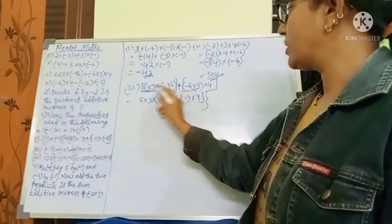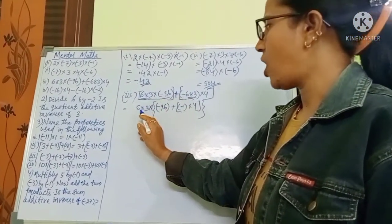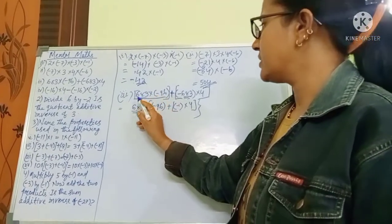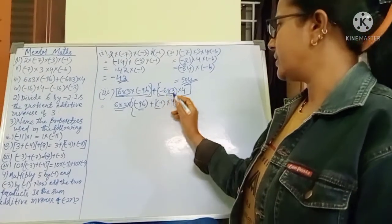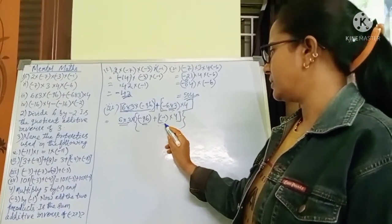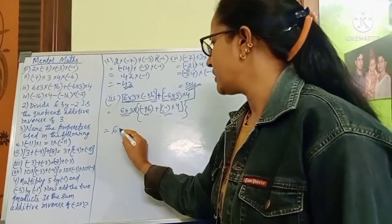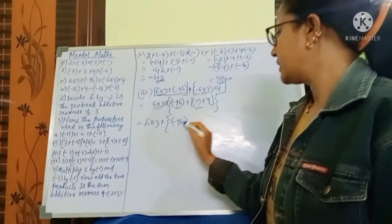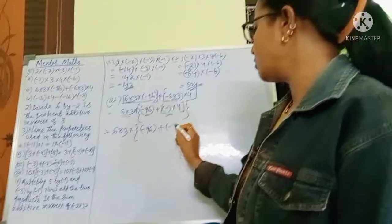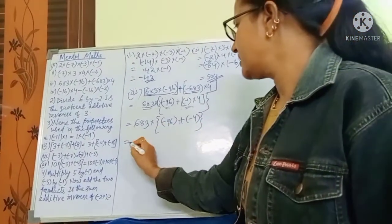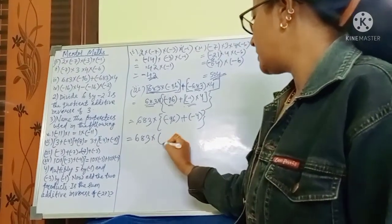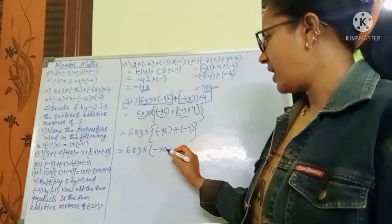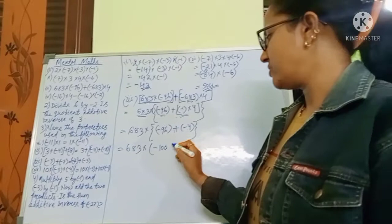Because 683 is the common number, I have taken it outside. Inside what remains: if 683 came out, the first part gives minus 96, and the second part keeps minus 1 into 4, which is minus 4. So now we have 683 into the bracket: minus 96 plus minus 4. That gives minus 100, because 96 plus 4 is 100 and both are negative numbers — we are adding, so we get a negative value.